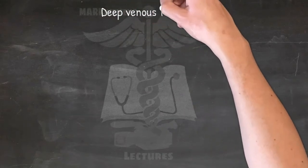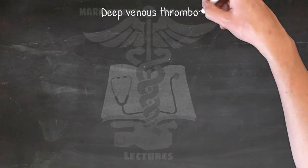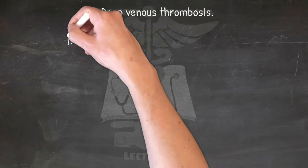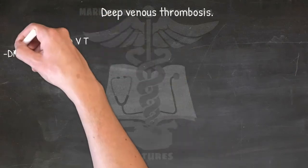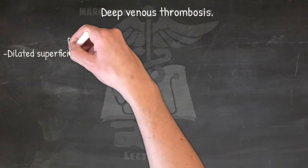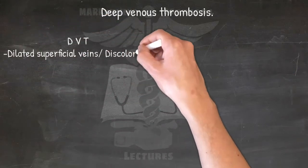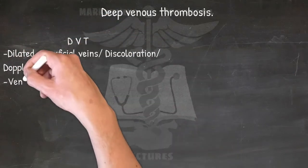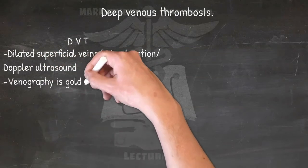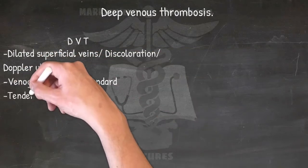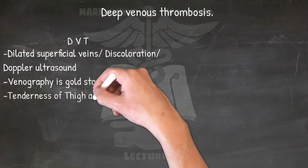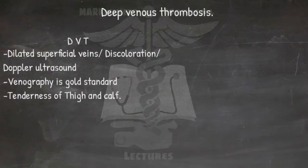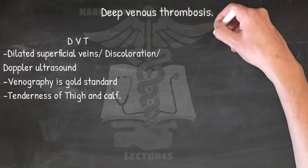Features of deep venous thrombosis: dilated superficial veins, discoloration, Doppler ultrasound, venography is gold standard, and tenderness of thigh and calf.